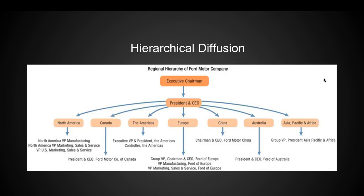For hierarchical diffusion, we look at the hierarchy of the Ford Motor Company. The executive chairman — the man in charge — has a memo he needs to get out. How does it spread to his company? By certain levels, by hierarchy. He passes his memo on saying we're going to sell only red cars now — it goes to the president and CEO, then spreads out to people below him, then to hundreds, then thousands of people below them. It moves by hierarchy.